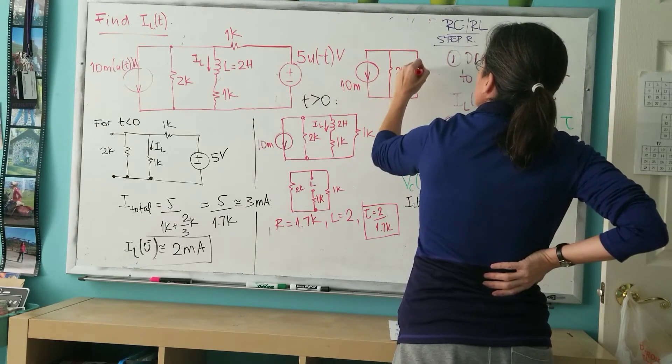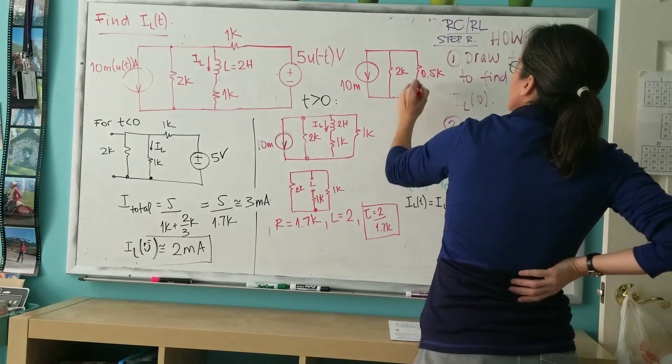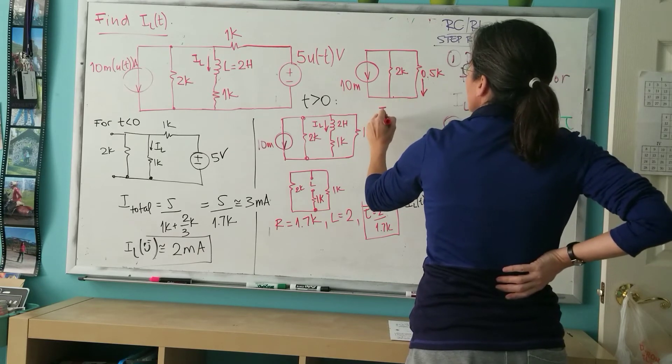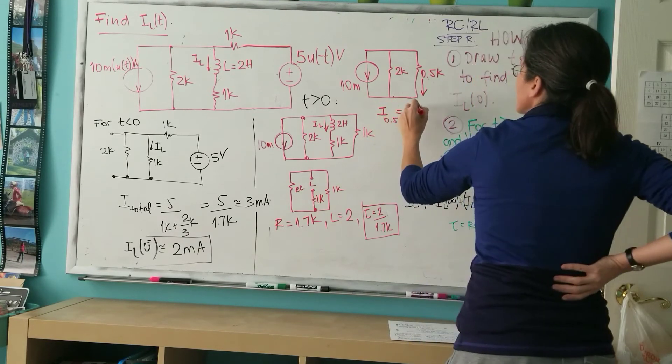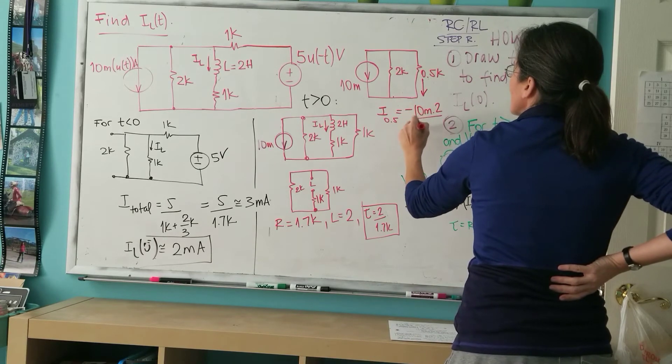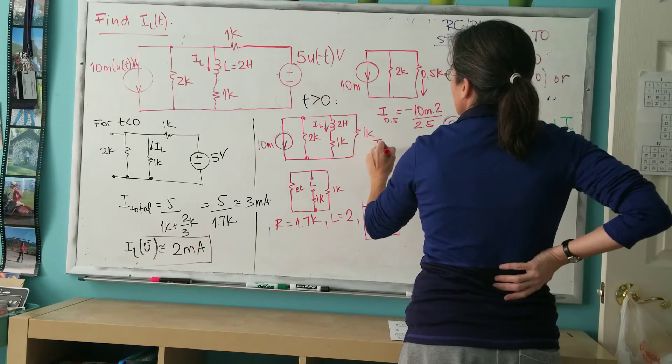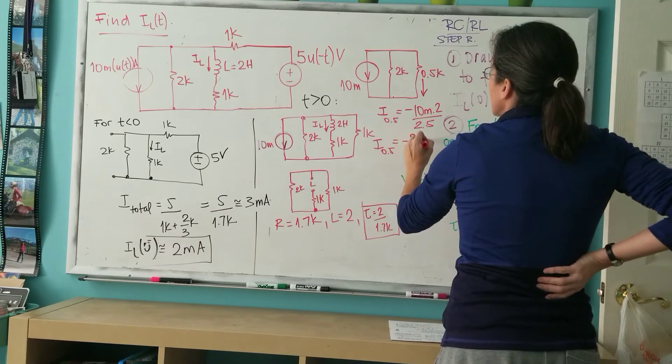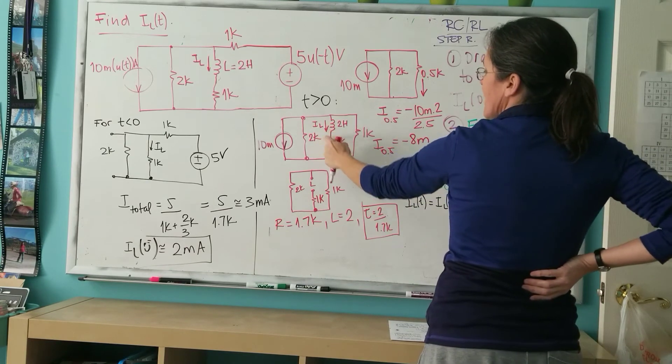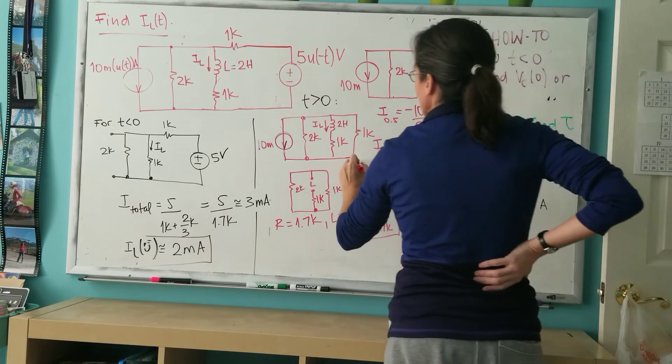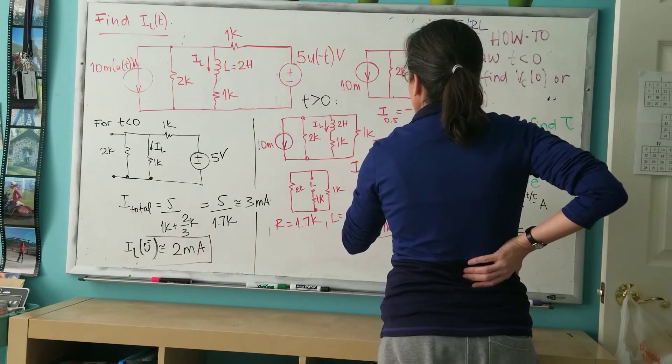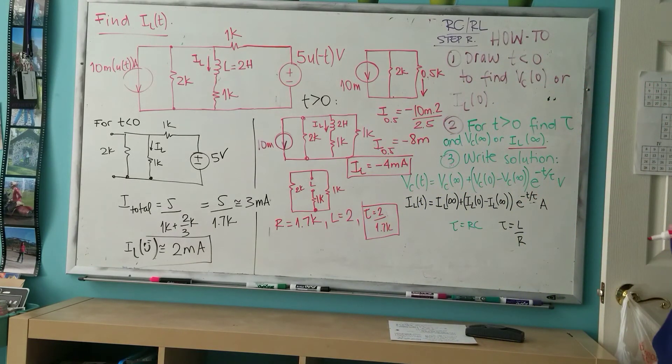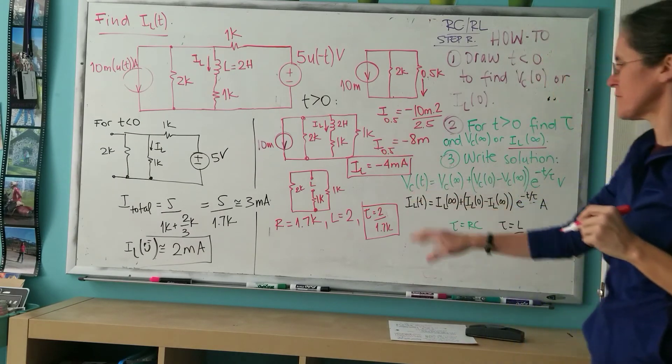This current here, I through the 0.5, is minus 10m times 2 divided by 2.5. I through the 0.5 will be 8m. And basically IL is half of that, so IL is minus 4 mA. I realize you can do this in any other way. I just want to make sure we have a number to plug into the final solution.